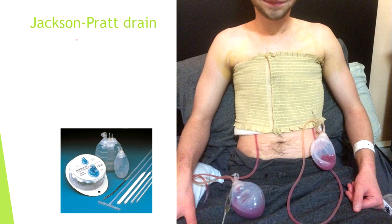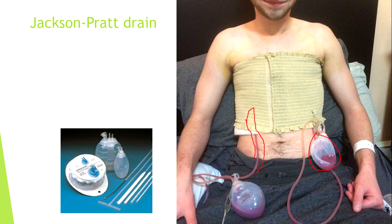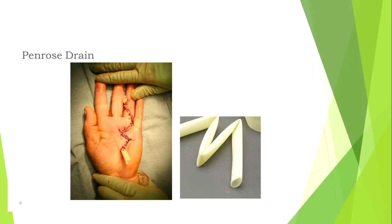Vacuum aspiration provides a dry wound that heals more easily. To use a Jackson-Pratt drain, connect the tube to the wound or body cavity, then press the bulb so it collapses. When you connect the tubes, the bulb tries to return to its original volume, creating vacuum aspiration.